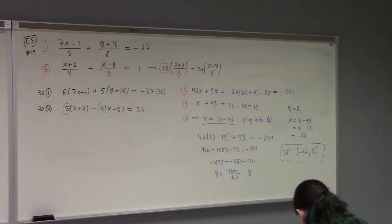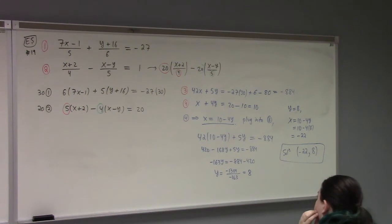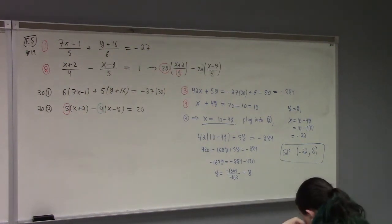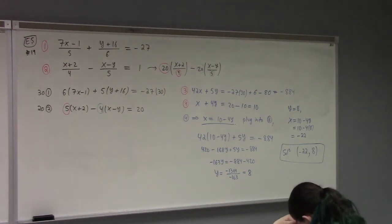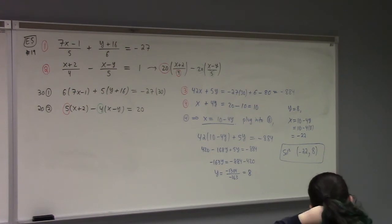Y equals 8 — then what's x? x is equal to 10 minus 4 times y, which is 10 minus 4 times 8, which is 10 minus 32, which is minus 22. So my answer is minus 22 comma 8.